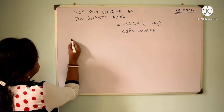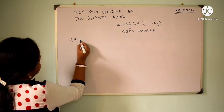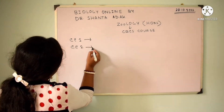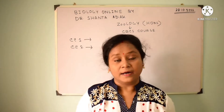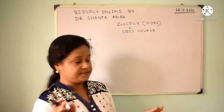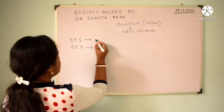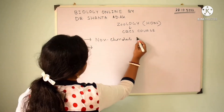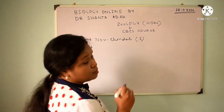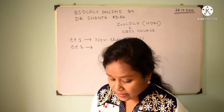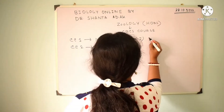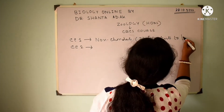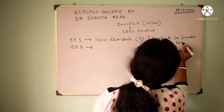In CC1 and CC2, first year, in CC1 Non-Chordate will be discussed — Non-Chordate Part 1. In Non-Chordate Part 1, we will discuss or you will study Protist 2, Protist 2, and Pseudocyloid.